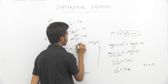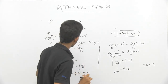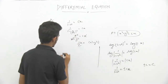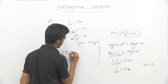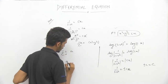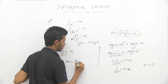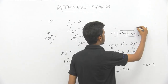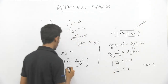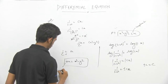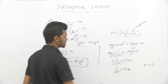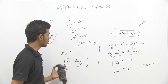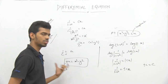Bringing C to the other side: 1/C = (x² - y²)/x. If we let 1/C = a (a constant), then ax = x² - y², or x² - y² = ax. This is what we had to prove: x² - y² = ax, where a is an arbitrary constant (which can be written as c as given in the question). Proved.